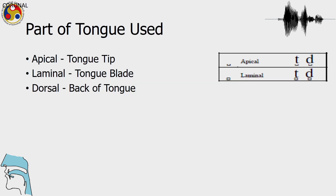Depending on which part of the tongue is used — whether it is the apical or laminal — these two diacritics are used to show apical versus laminal. This is the symbol for apical; this is the symbol for laminal.